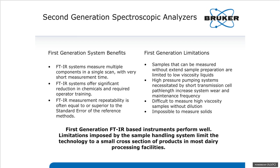One feature of FTIR spectrometers in measuring fluid milk samples is that the repeatability and accuracy is often equal to or superior to the standard error of the reference methods — meaning you are not sacrificing anything using FTIR relative to wet chemistry. The one downside of FTIR is that because of the nature of the spectra and the absorbances in the infrared, you have to use very thin path length cells that will plug up and have high back pressure when running high-viscosity samples like creams or ice cream premixes.